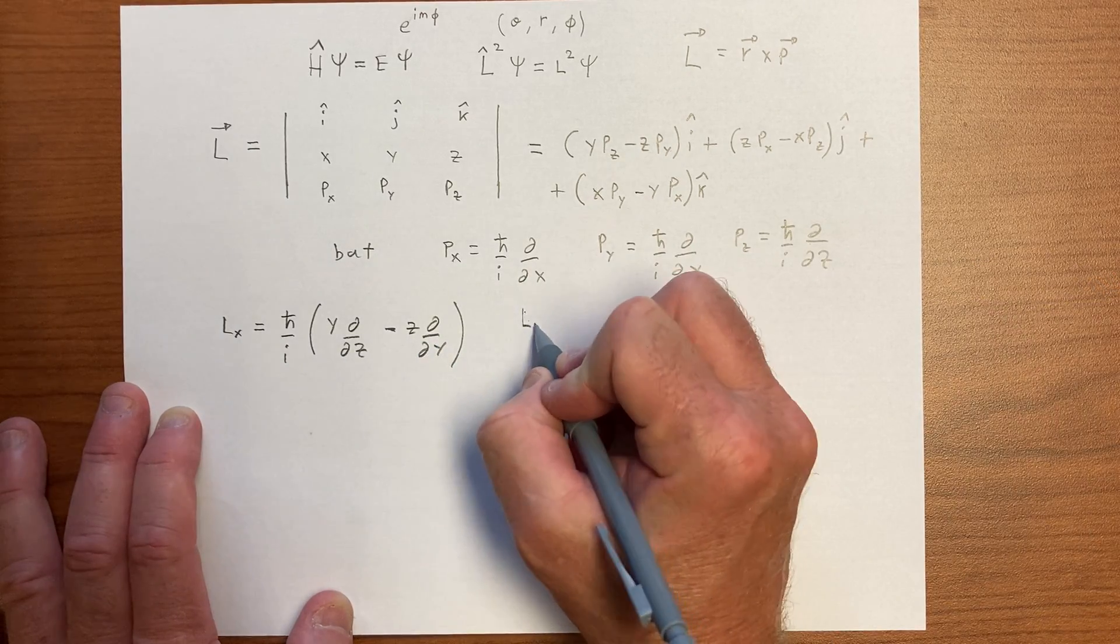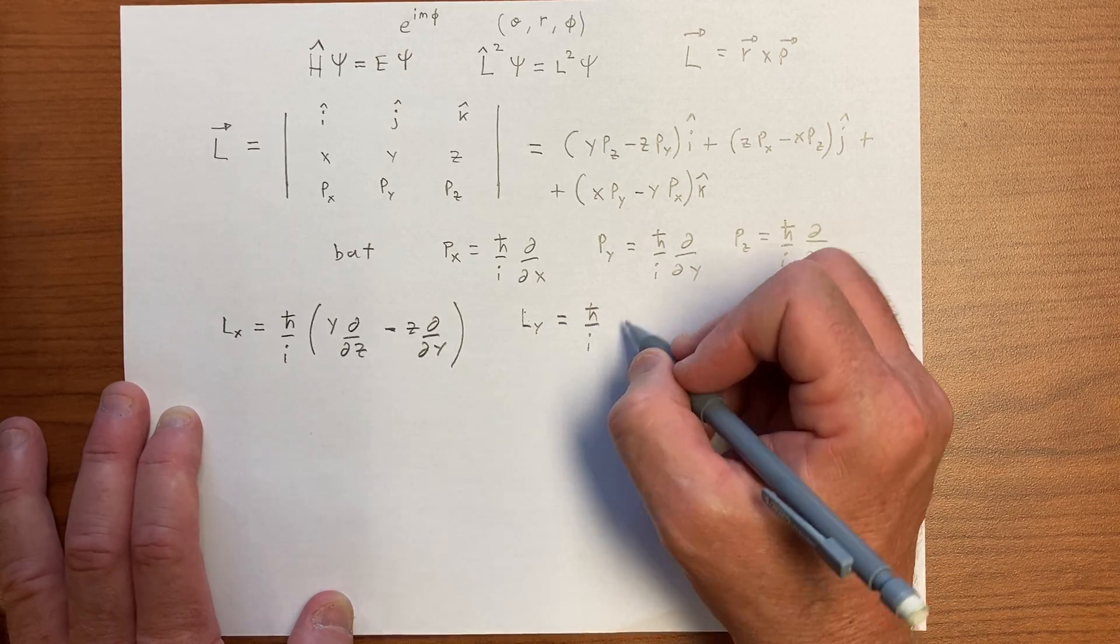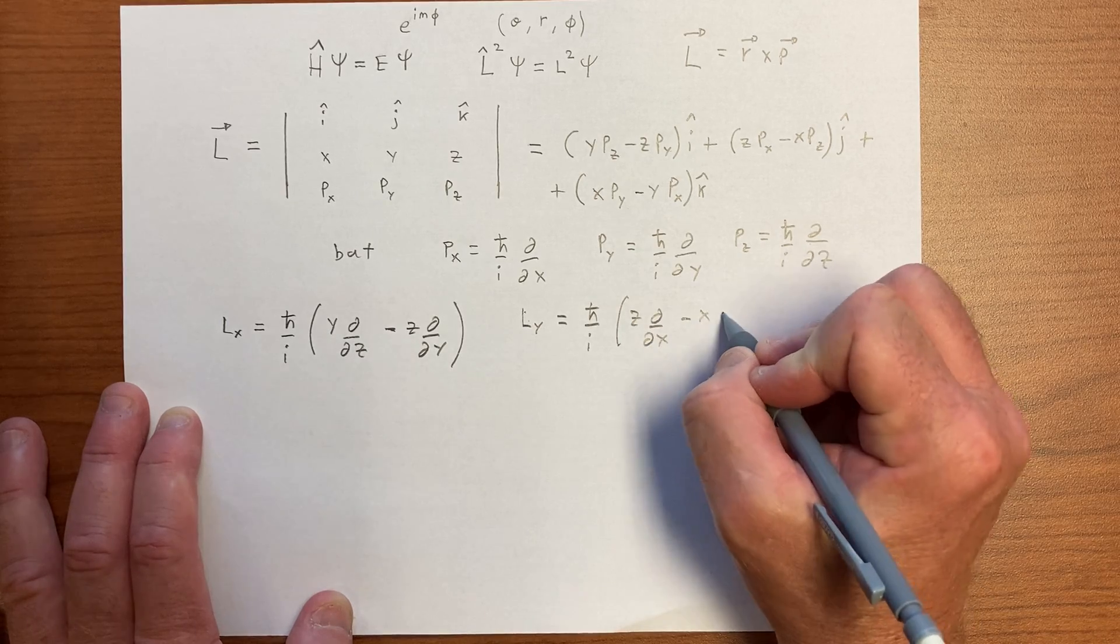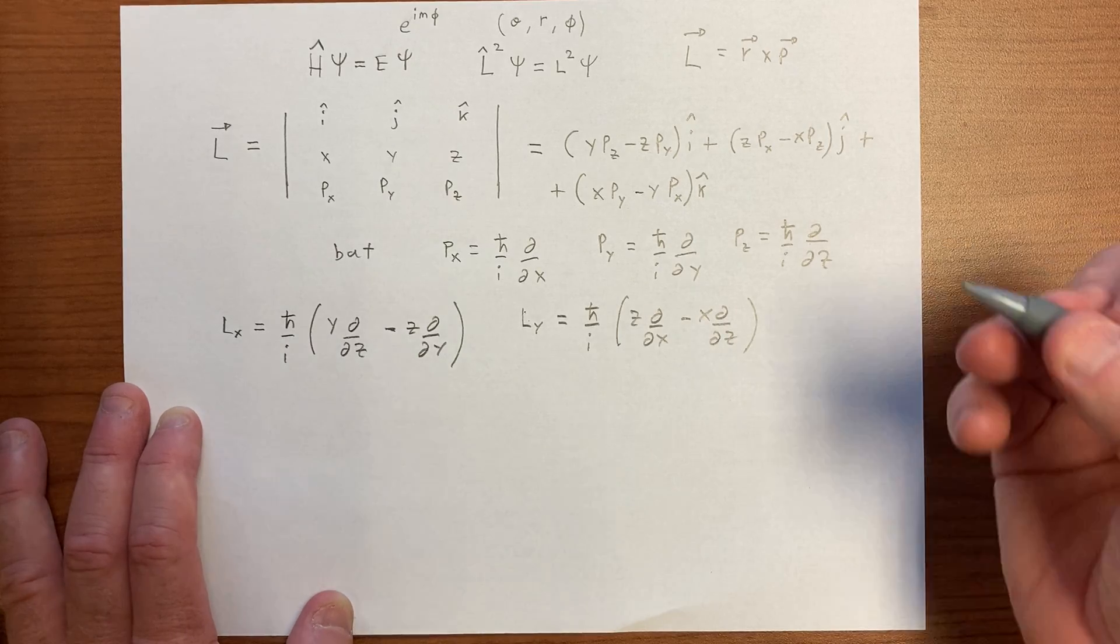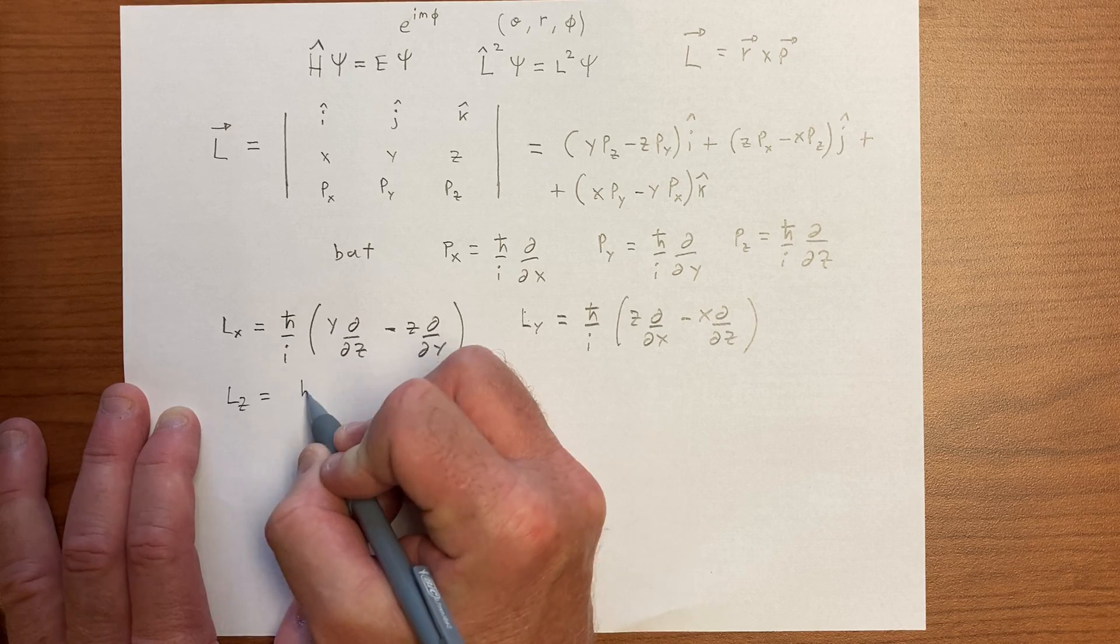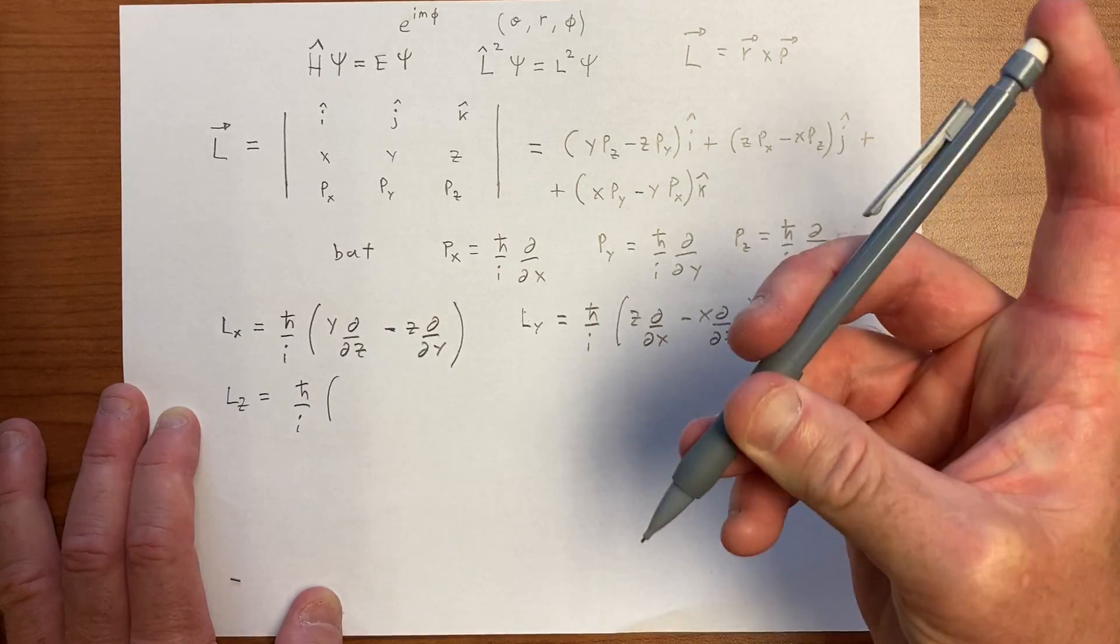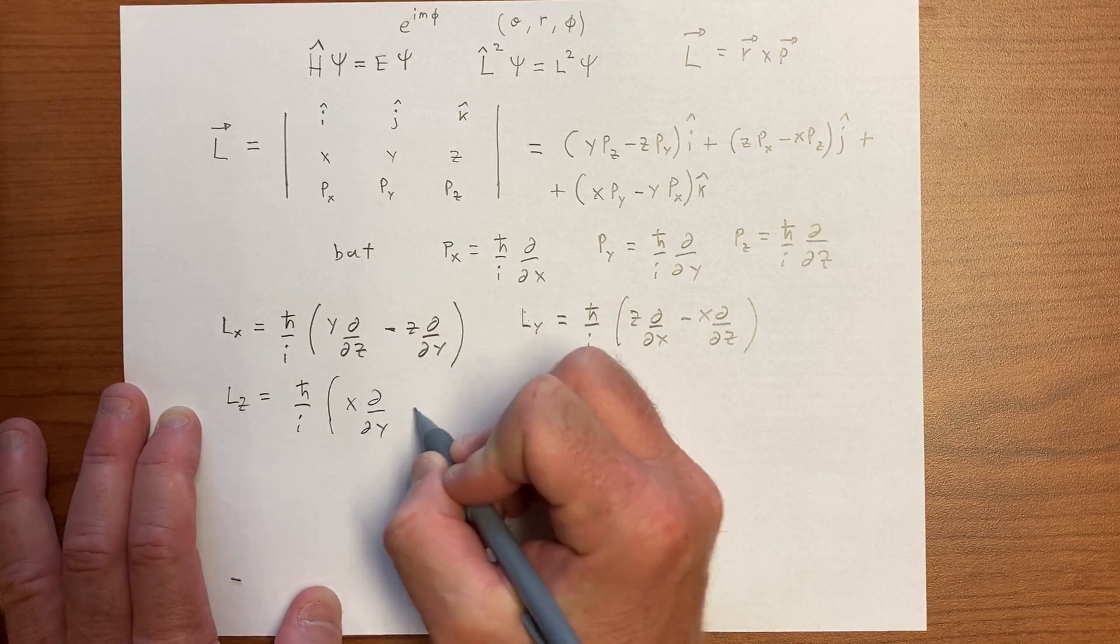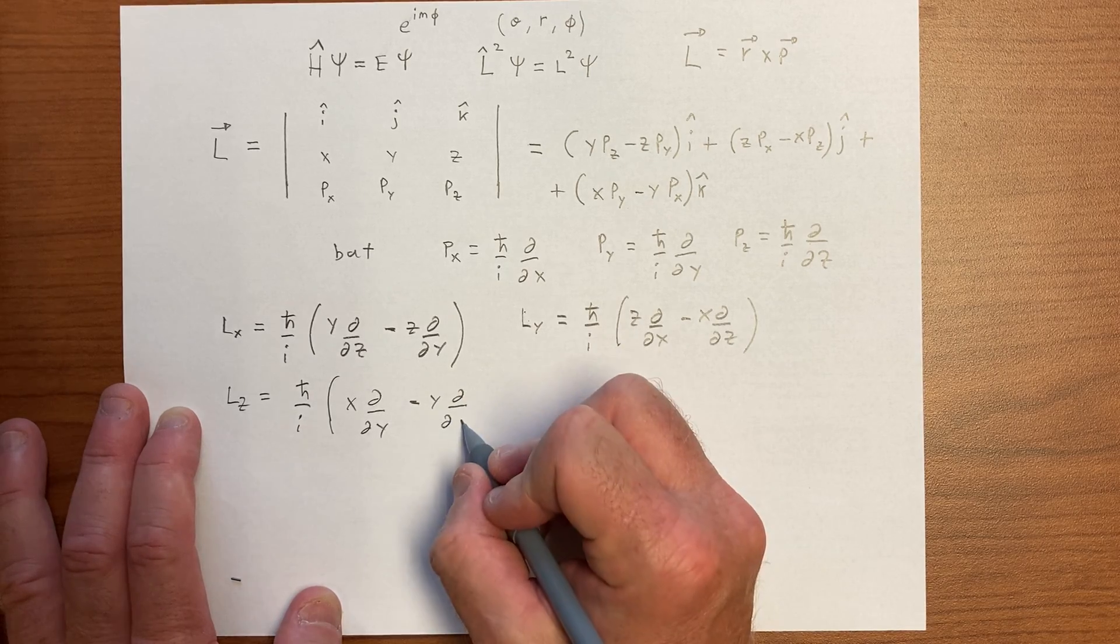L_y becomes h bar over i, as an operator, z d by dx, d by dx minus x d by dz. And L_z becomes h bar over i, x d by dy minus y d by dx.